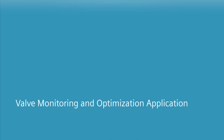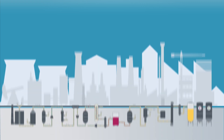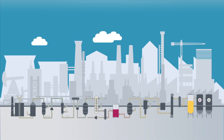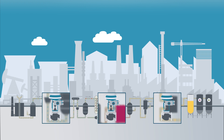Do you want to increase the availability of your assets and plants while reducing your operating costs at the same time? Digitalization helps you by using valuable information from the field level. Control valves are crucial assets for controlling processes efficiently and ensuring product quality. That is why many valves are serviced too soon, even when it's not necessary yet, or there's the risk of failure that can lead to system downtime.